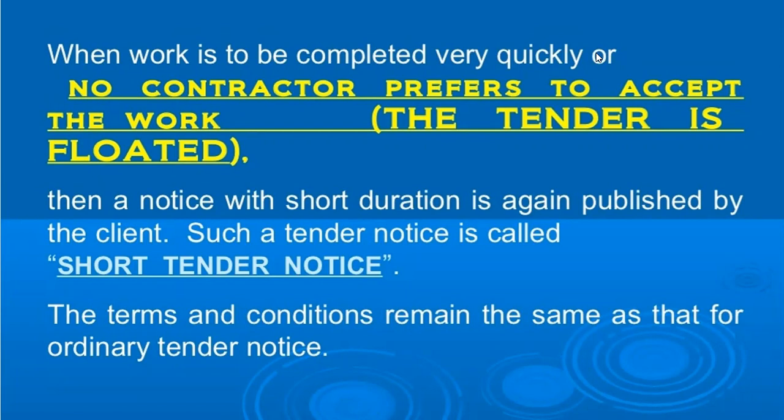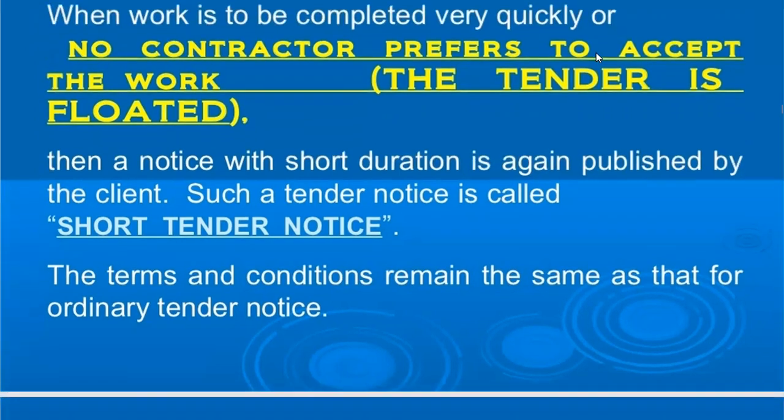If there is an open tender, a negotiated tender, or a limited tender, we talk about it. Sometimes the work will be completed very quickly, in a very short time. It happens sometimes that the contractor doesn't prefer to accept the work. So what happens is that the client publishes a short duration notice, which we call a short tender notice. The terms and conditions are the same as the ordinary tender notice, but it is of short duration.